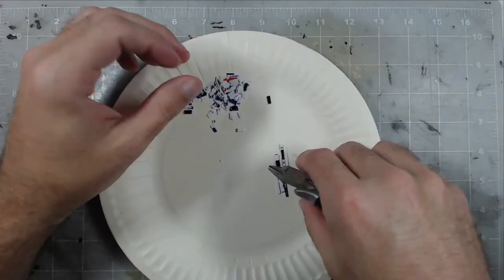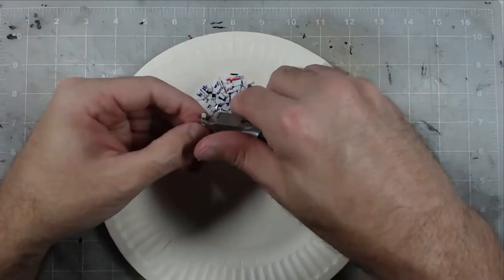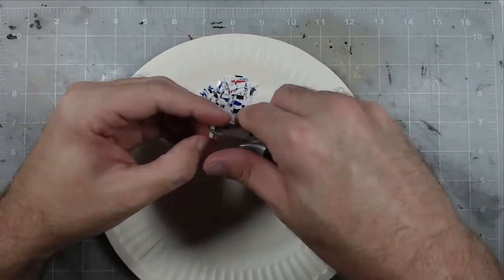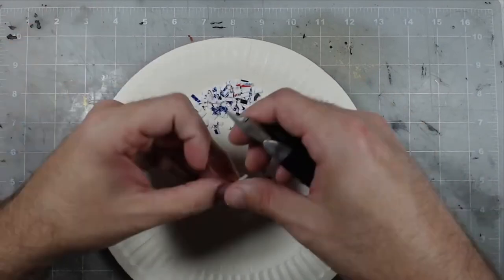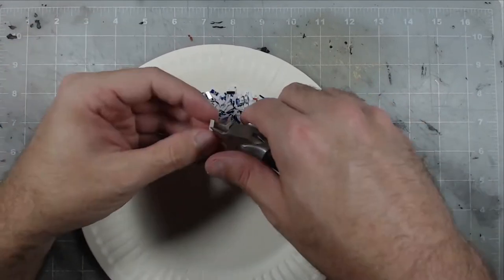I also wouldn't recommend making a pattern that utilizes curves. Straight angle shapes like squares, rectangles, and triangles will be a lot easier and quicker to cut. If you're worried about the accuracy of your cuts, just cut a little bit bigger than you intend to and then sand down the excess afterwards.